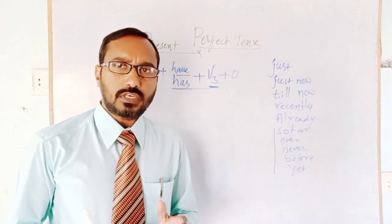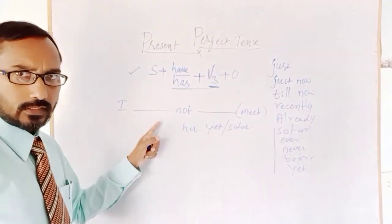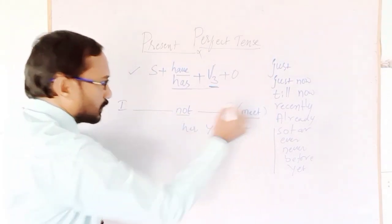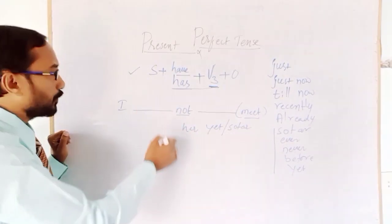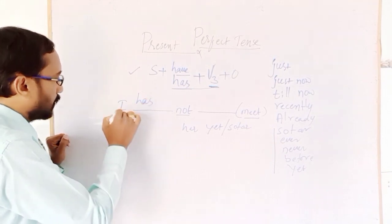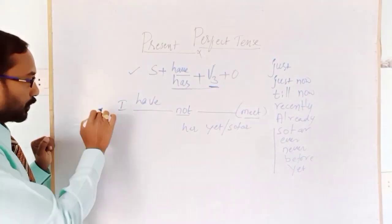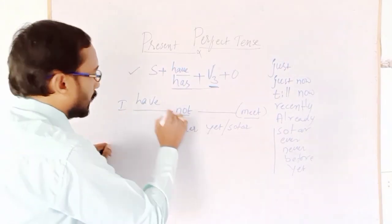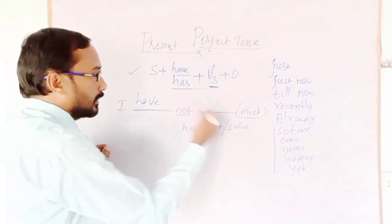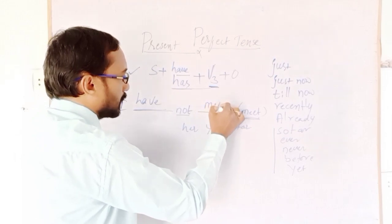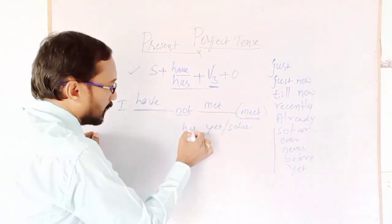In any competitive exam, most examples are given in negative form. Look at this: I dash not meet. So instead of 'meet,' after I we use 'have,' and for singular subjects we use 'has.' Meet becomes 'met' (V3). The answer is: I have not met her yet or so far.